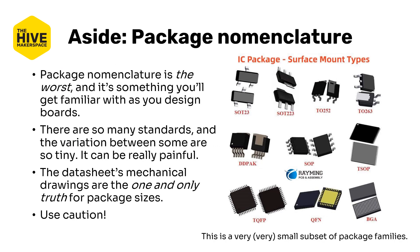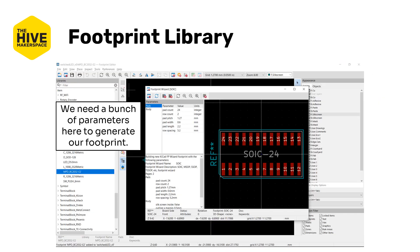Package nomenclature is awful — it's something you'll just get familiar with through design. There are so many standards and variations that it can be very painful. The datasheet's mechanical drawings are really the one and only truth for a specific part's package size, so use a lot of caution when assuming your part is a standard package. The best option is almost always to get your part models generated by one of these services. One thing you can do is place a general built-in component first, then once you get the correct part, swap it out — that shouldn't be too much of a change.